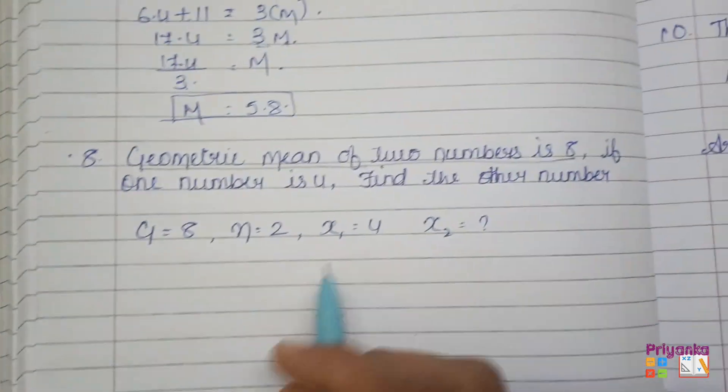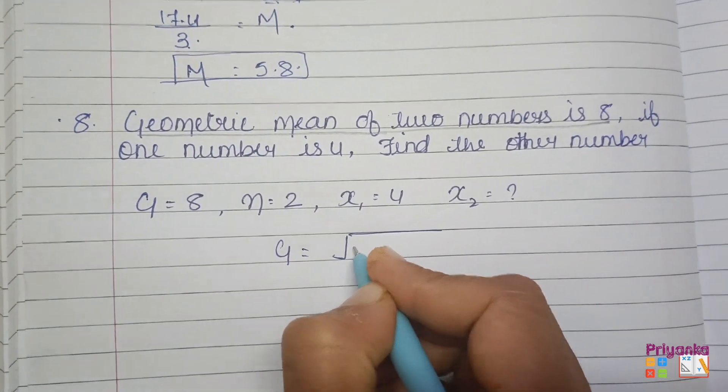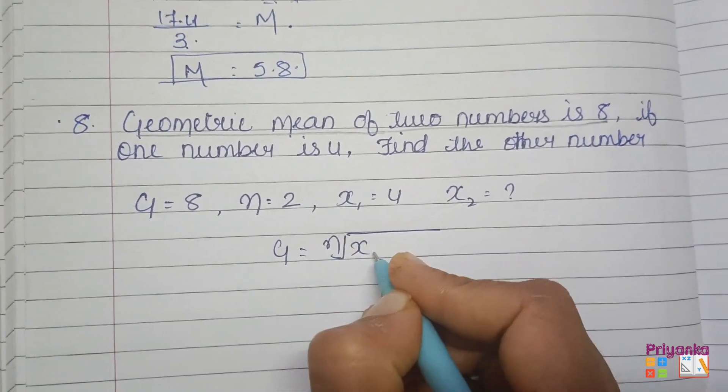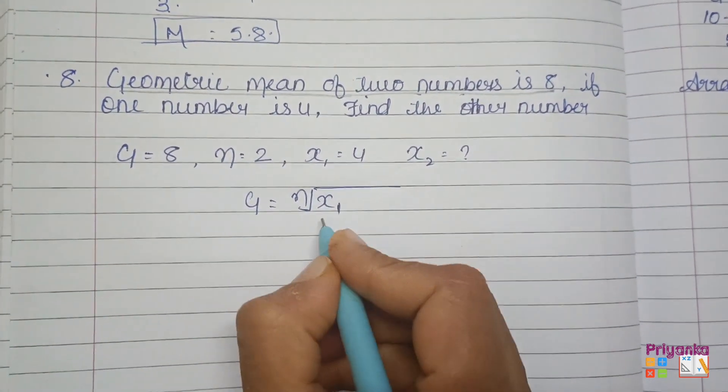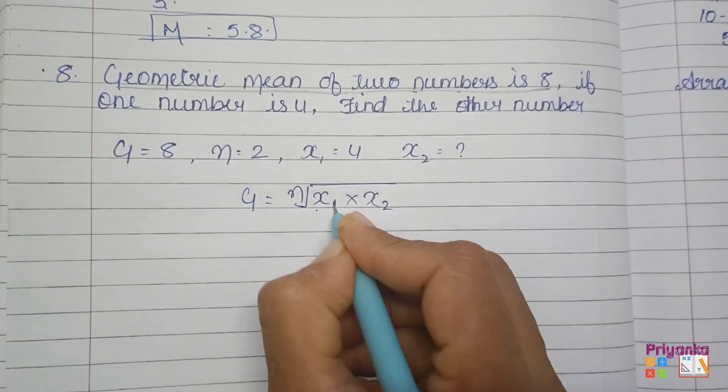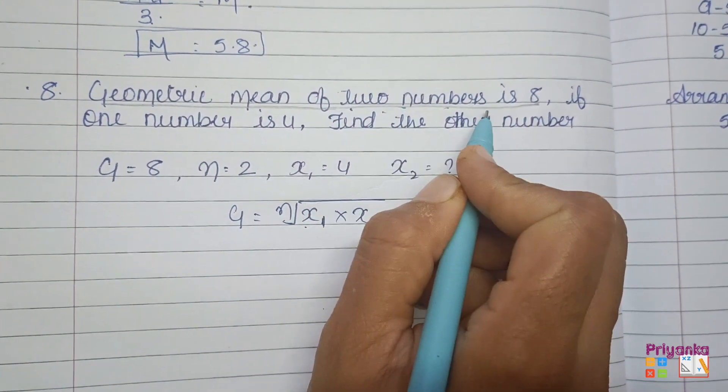First, remember the formula of geometric mean. As in the question it is given there are 2 numbers, we'll put x1 and x2. Only 2, because in the question it is given that there are only 2 numbers.